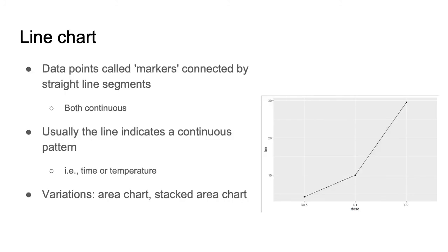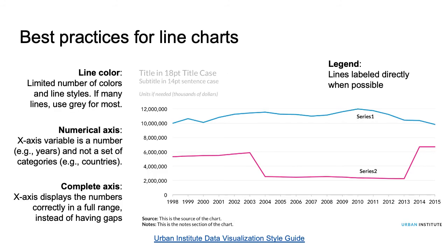Line charts include data points called markers that are connected by straight line segments. They work best when representing continuous data, such as time or temperature. Some variations include area charts or stacked area charts, where the space under the line or lines are filled in. Some best practices include labeling the lines directly when possible, as it can be difficult to connect lines to legend entries based only on color and style. Limit the number of different colors and line styles used in a single chart.